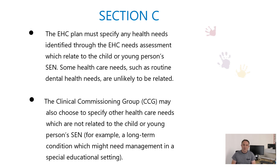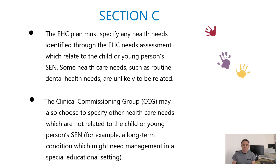Section C is where the health needs are specified. When the local authority carries out the EHC needs assessment, it's required to seek advice from the health service through the designated medical officer. The clinical commissioning group or CCG is ultimately responsible for what goes into this section because it represents the health advice for the assessment. Here you'll typically find particular diagnoses described — for example, the child's diagnosis of autism or epilepsy, or a physical difficulty. The same difficulties can also be identified in section B, but the advice within section C comes from the health service.